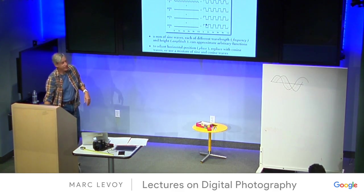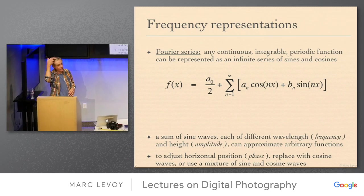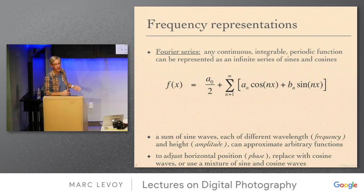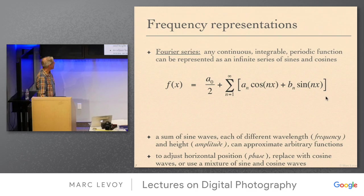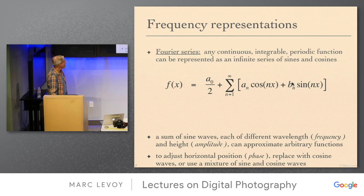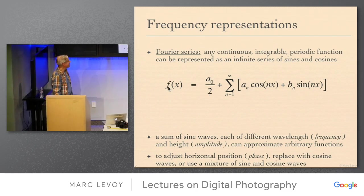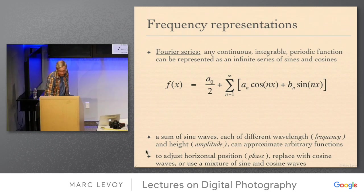Those intuitions are formalized in the Fourier transform. This is an orange slide — students at Stanford are not responsible for it on the exam. But all it really says is: a sum of sines and cosines with different weights on each and different frequencies can approximate any function. That's all the Fourier transform says.